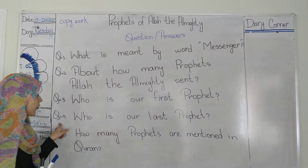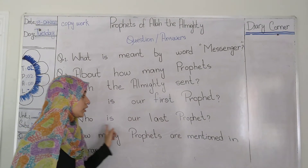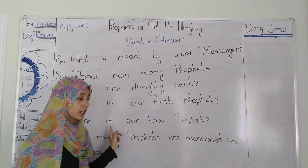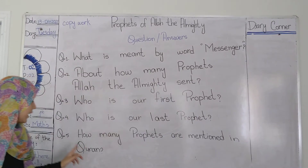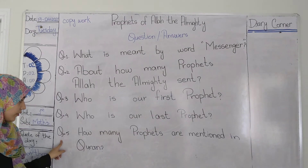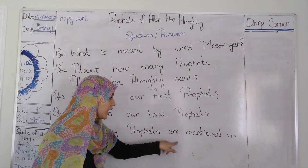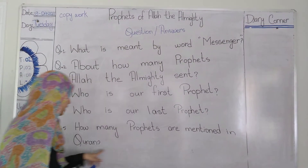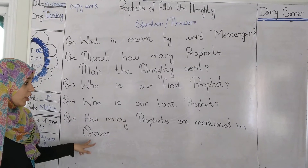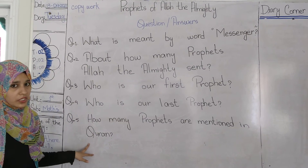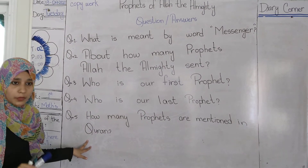Question number four: Who is our last prophet? You need to write the name of our last prophet. And question number five: How many prophets are mentioned in the Quran? This is also given in the book, so you can write it.